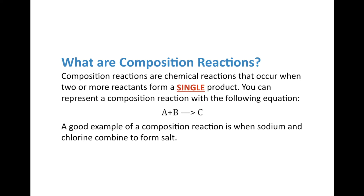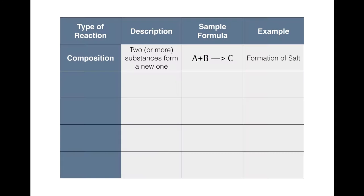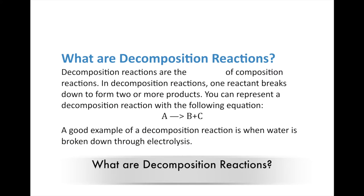A good example of a composition reaction is when sodium and chlorine combine to form salt. Sodium is substance A, plus chlorine, which is substance B, yields the third substance C — salt, or sodium chloride. For our graphic organizer: composition reactions are two or more substances forming a new one; A plus B yields C is the sample formula, and the formation of salt is the example.